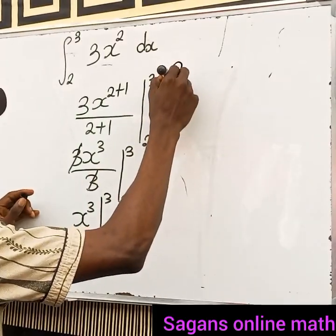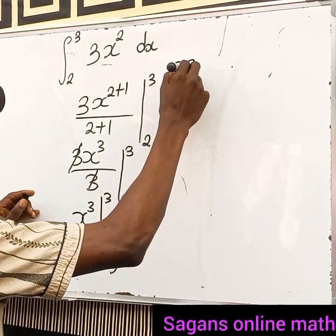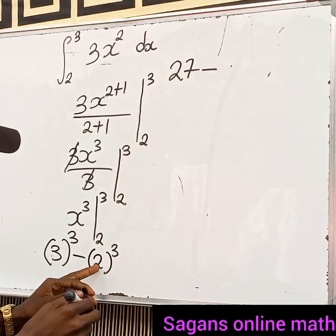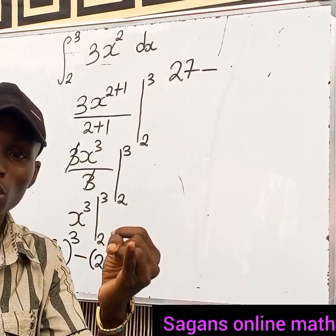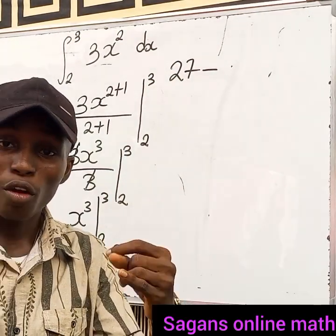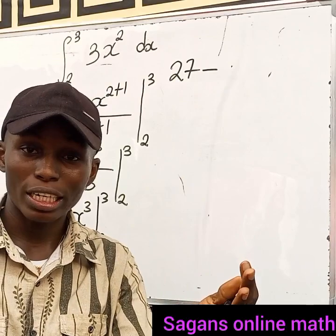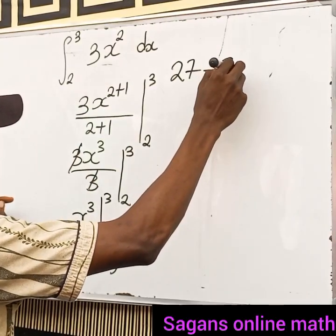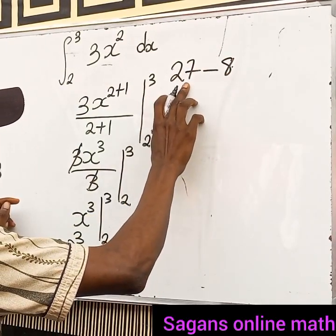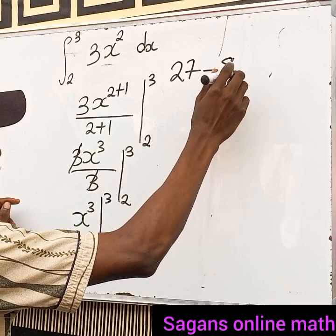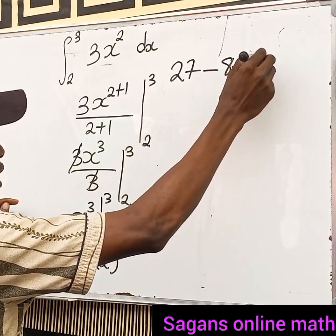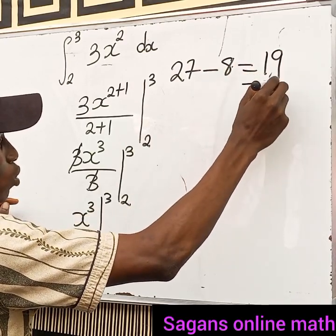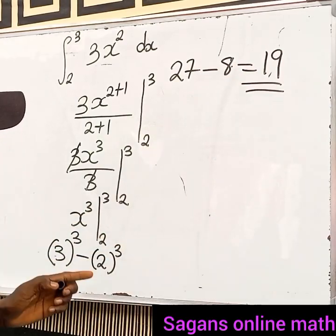Three to the power of three is 27, because three times three is nine and nine times three is 27. Then two raised to the power of three: two times two is four, and four times two is eight. So 27 minus 8 equals 19. That is the answer to this problem.